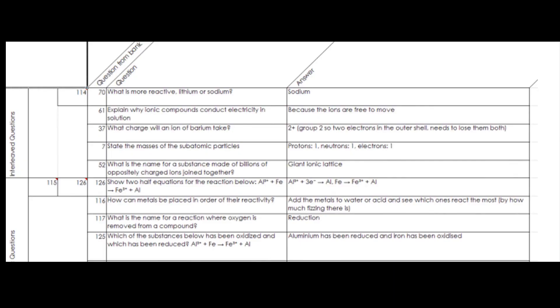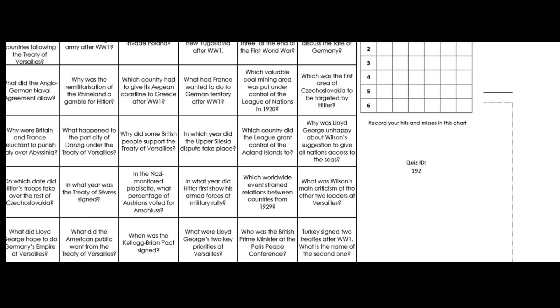Another version of that is Retrieval Roulette by Adam Boxer on Twitter — you can visit his website and download it. Scott Alsop, from a history perspective, has designed something similar in the form of battleships. You can see his web address, MrAllstopHistory.com. You can download this and it generates questions, and students can play battleships either electronically or on paper using the grid. That's really handy for retrieval.